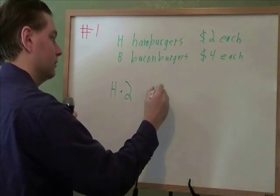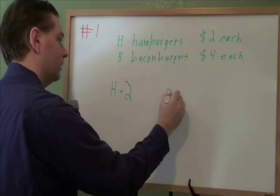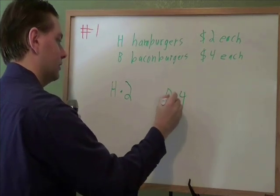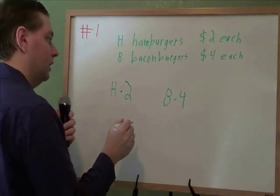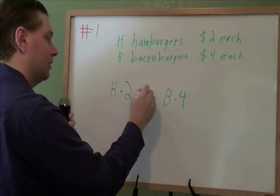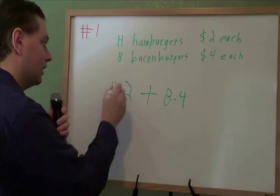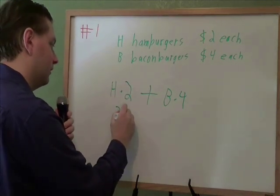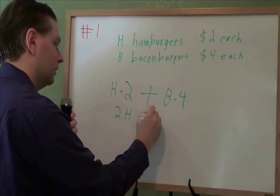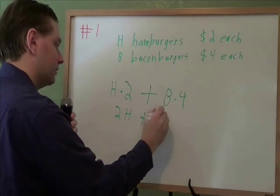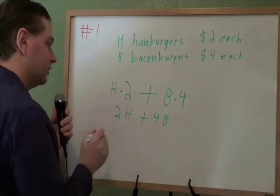How much do you spend on bacon burgers? Well, $4 each, so each of them costs you $4. So b times 4. And overall, if you buy hamburgers and bacon burgers, you have to add up to get the total cost. And that's how problem 1 goes. They probably have the numbers in front of the letters, which is typical in algebra. But that is your answer.